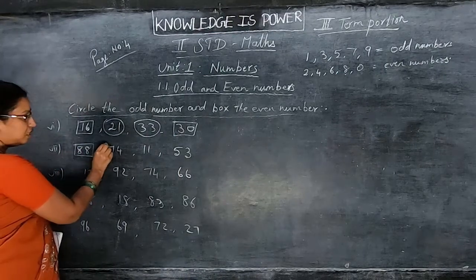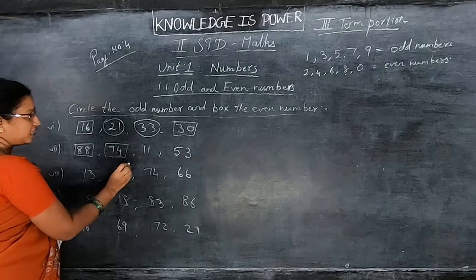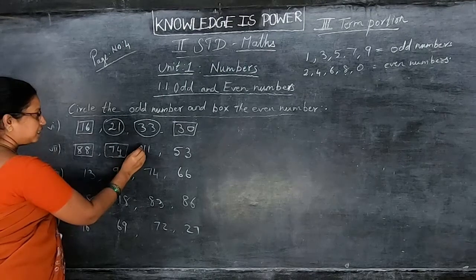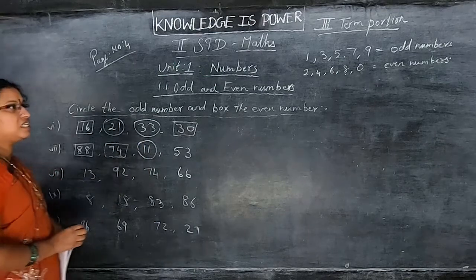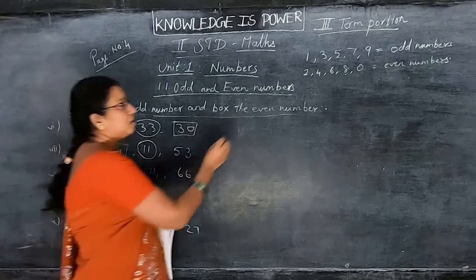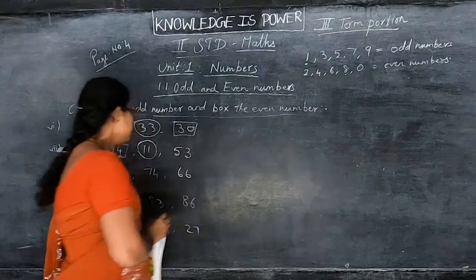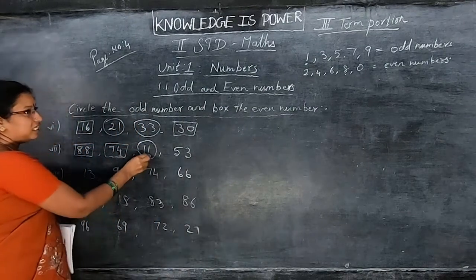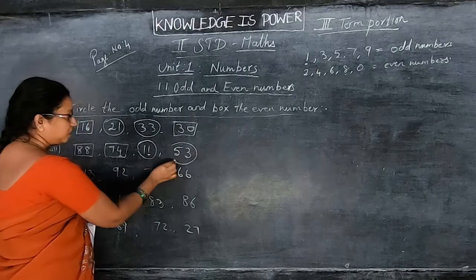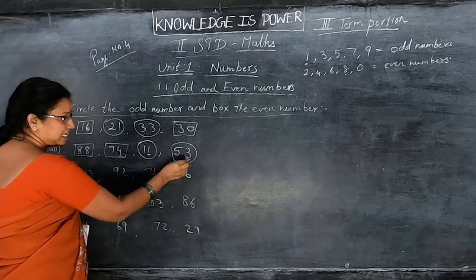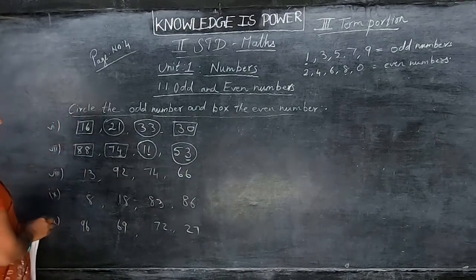74 is also an even number — in 1's place, 4 is there. Then 11: you should circle that, it is an odd number — in 1's place, 1 is there. Then 53: in 1's place, 3 is there, so you circle it — that is an odd number.